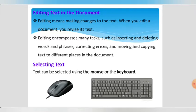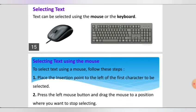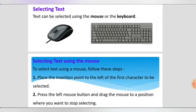Next, how do we select text in the document? With the help of the mouse and keyboard, we can easily select the text. To select text using the mouse, place the insertion point to the left of the first character to be selected.